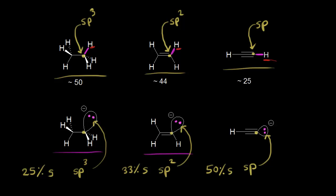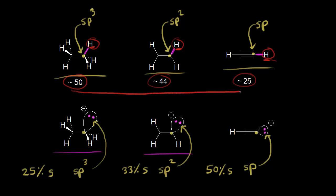Now let's look at pKa values. The pKa for this proton on ethane is approximately 50. The pKa for ethene is approximately 44. And the pKa for acetylene is about 25. The lower the pKa value, the stronger the acid. So as we move to the right, pKa decreases and acidity increases — acetylene is the strongest acid of these three, which means it has the most stable conjugate base.